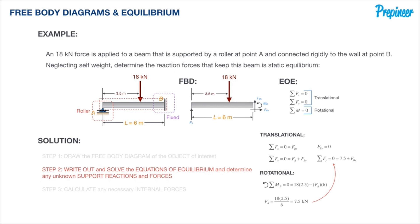The sum is going to equal 18 times 2.5, because it's two and a half meters from the right side. That's taking six meters minus three and a half.